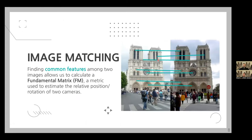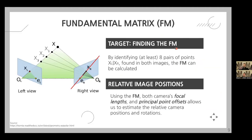At the heart of uncalibrated structure from motion is the image matching algorithm. Image matching finds common features within image pairs to calculate a so-called fundamental matrix — a 3×3 mathematical construct used as a metric to estimate the relative position and rotation of two cameras. The fundamental matrix is typically calculated using at least eight pairs of points in two images, comparing their relative positions. Combined with the camera's focal length and principal point offsets — intrinsic hardware metrics — this allows us to estimate relative camera positions and rotations for 3D reconstruction.